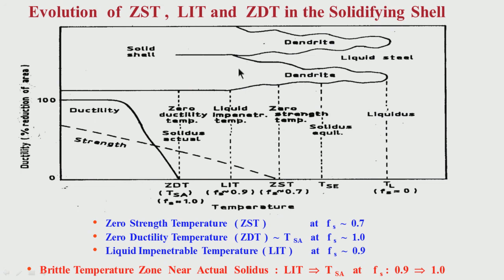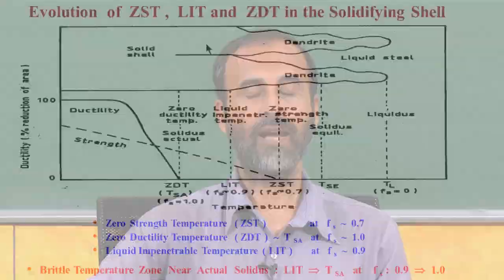But what happens when the solid fraction is around 0.9? The dendrites are touching each other. That means if there is a crack formation in this area, liquid steel cannot penetrate. That is why this is called the liquid impenetrable temperature. At this temperature, which corresponds to 90 percent solid fraction, liquid steel cannot penetrate, and if there is a crack formation, that crack is going to stay. So it is a problem for the quality of the cast, because cracks forming due to brittleness remain in the cast product — there is no chance to heal them.